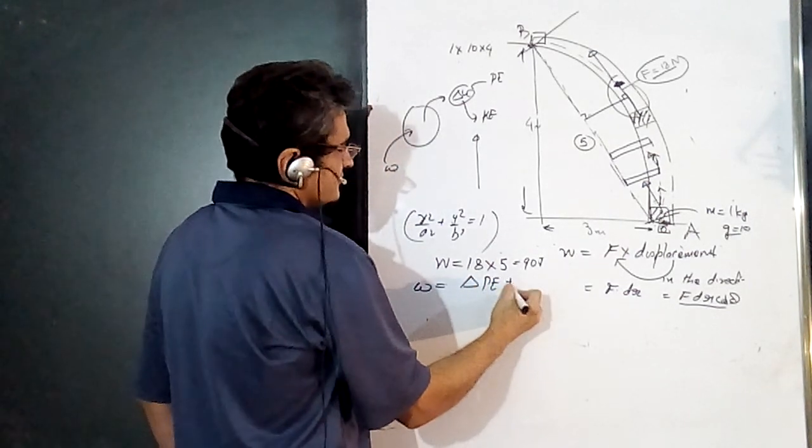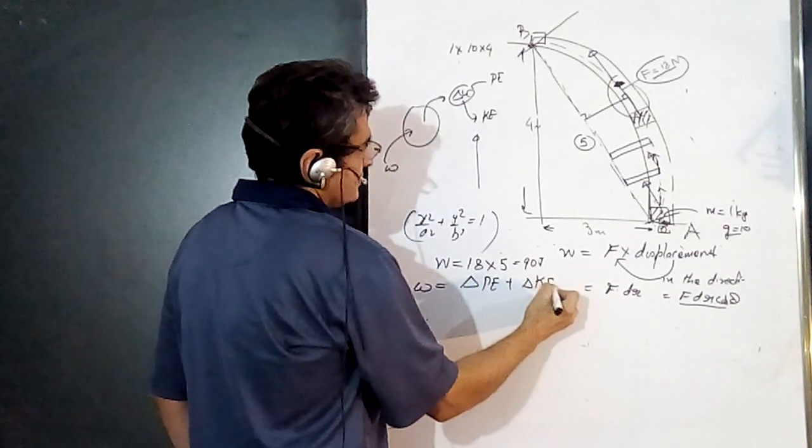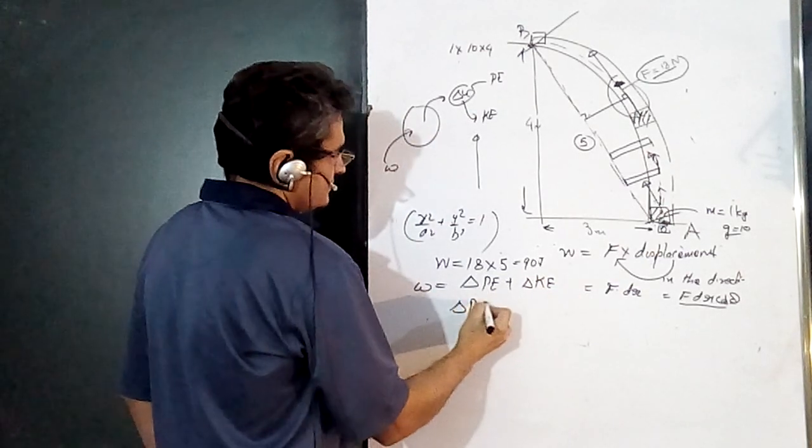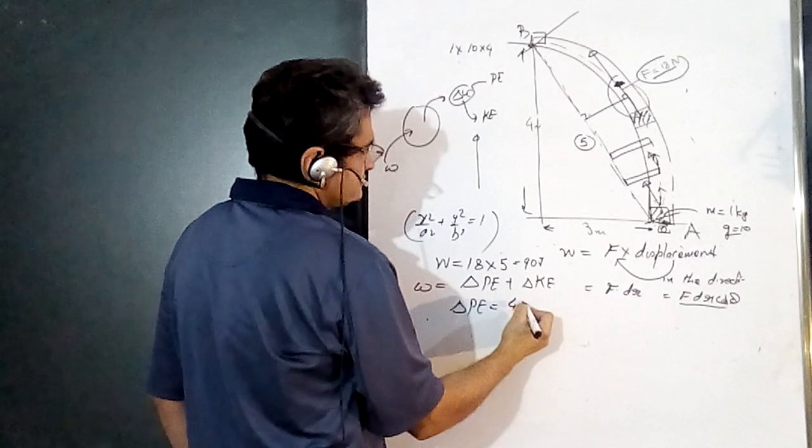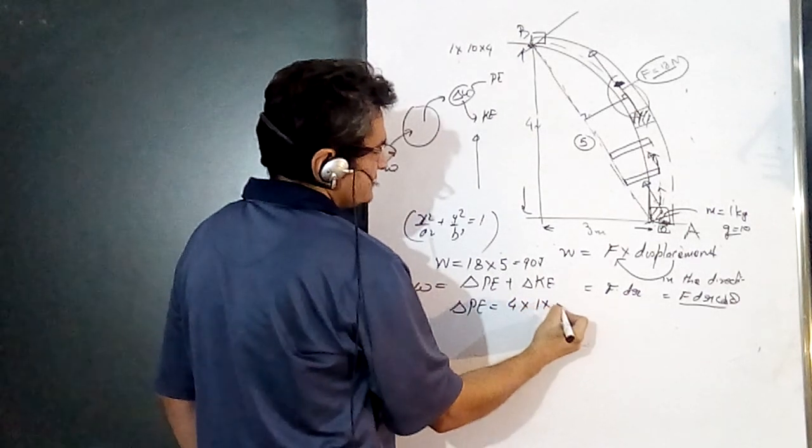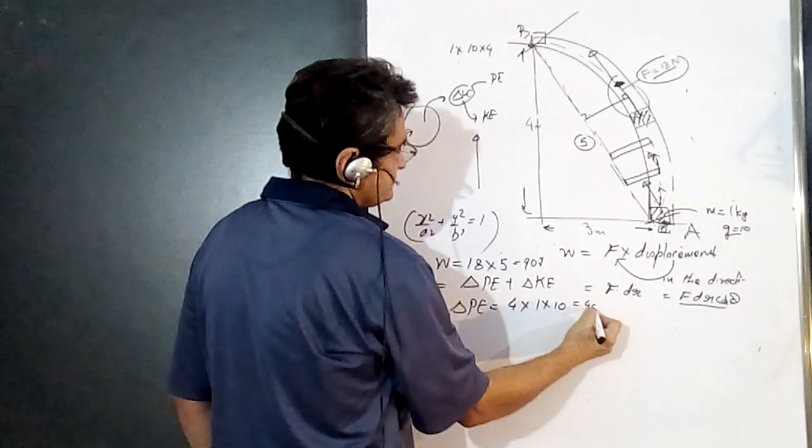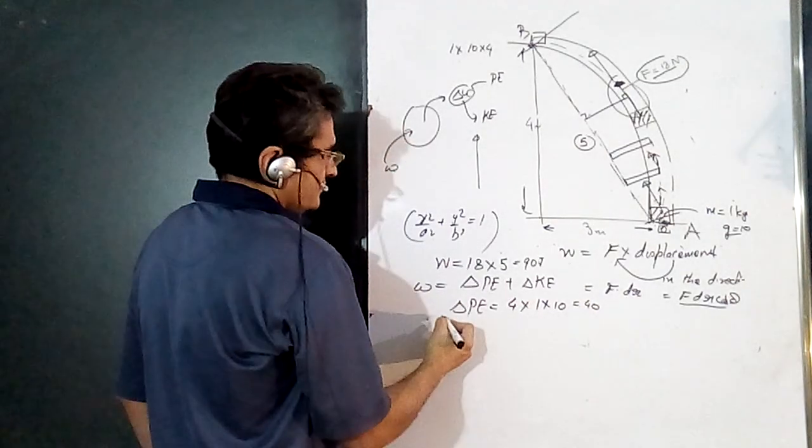Now what is ΔPE? It is the difference in height, which is 4, into m, which is 1, into g, which is 10—that is 40. ΔKE we have to find, so ΔKE